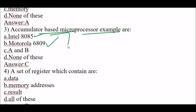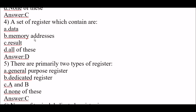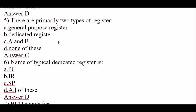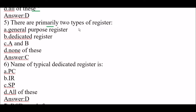Next question: a set of registers which contain data, memory addresses, and results — the right answer is option D, all of these. Next question: there are primarily two types of registers — first, general purpose registers, and second, dedicated registers. The right answer is option C, A and B.